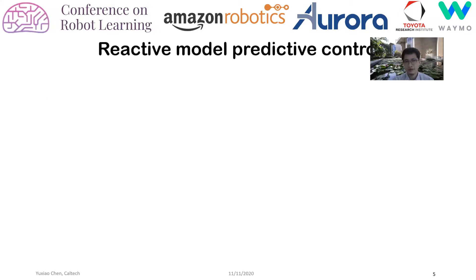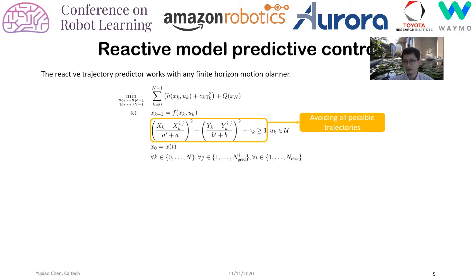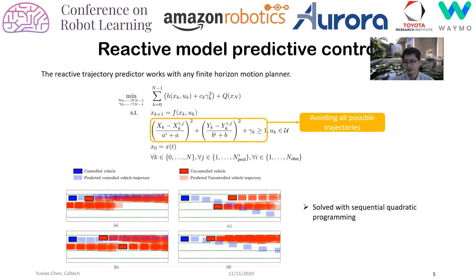Now that we have a reliable trajectory predictor, we use model predictive control for trajectory planning. MPC solves a finite-horizon optimization problem at every time step, where the constraint requires the vehicle to avoid all possible trajectories of other vehicles given by the predictor. These are snapshots of the MPC: red trajectories are predicted by the predictor, and the blue one is the trajectory given by MPC optimization. MPC is solved with sequential quadratic programming for real-time performance, and we use slack variables to avoid infeasibility.